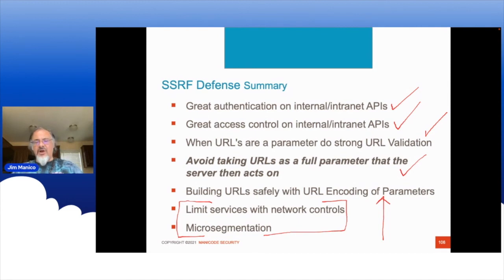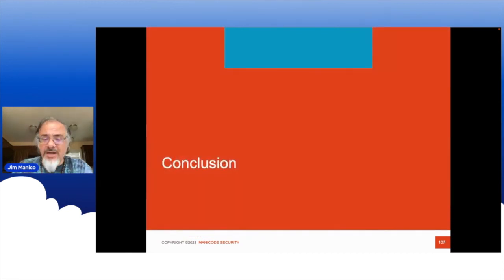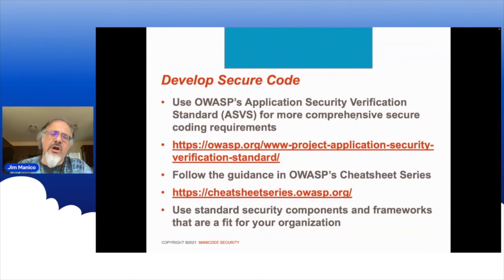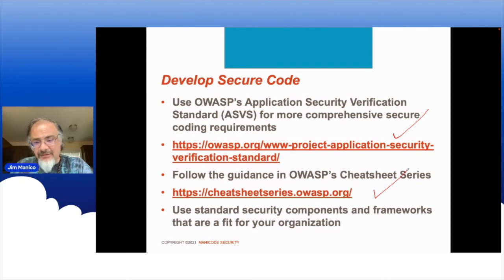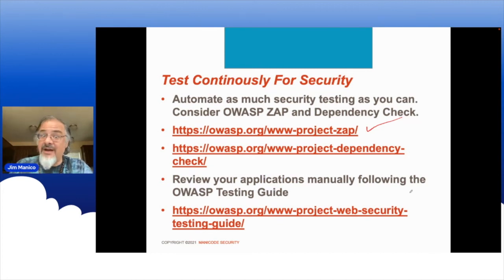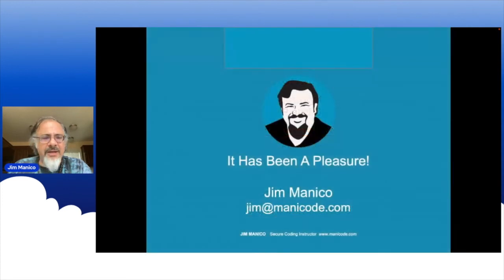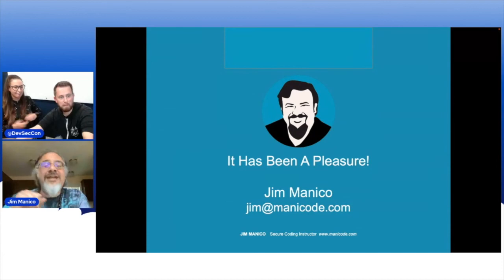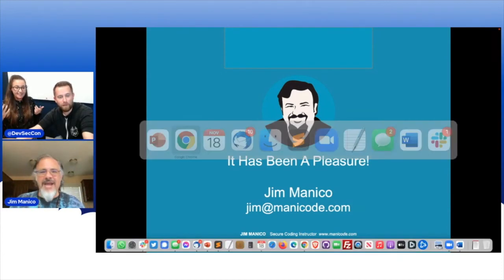That's the OWASP Top 10 2021 in a nutshell. Develop secure code — use the ASVS standard and the cheat sheet series as references on how to write secure code, and test continuously with ZAP and other OWASP tools. There's also the Web Security Testing Guide from OWASP. That's 15 minutes of the OWASP Top 10.